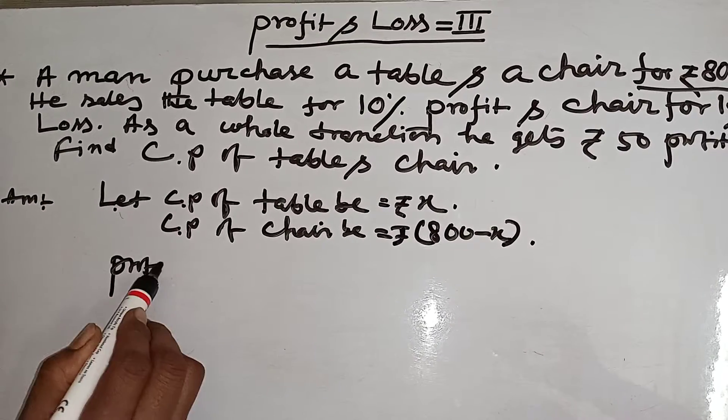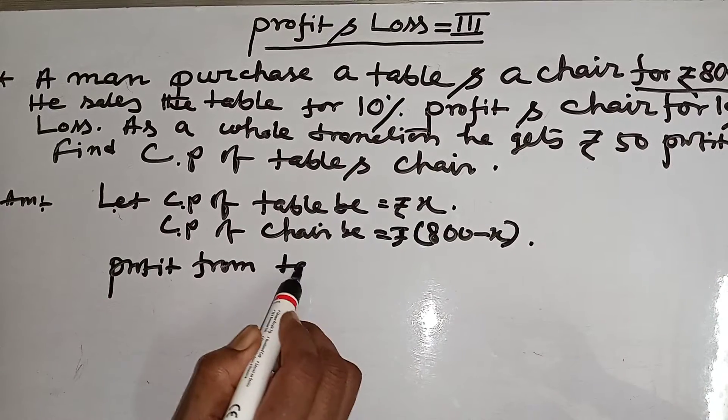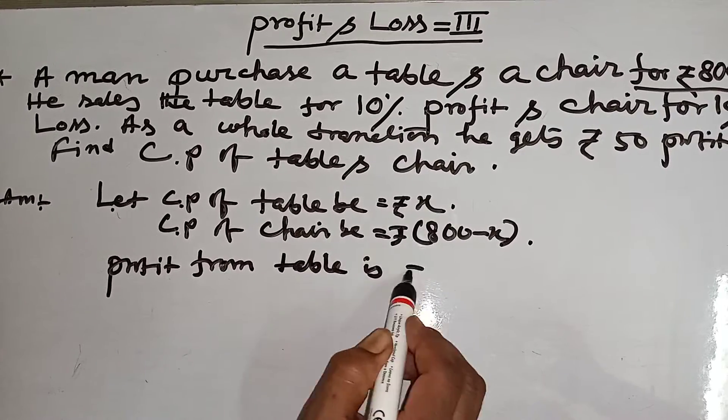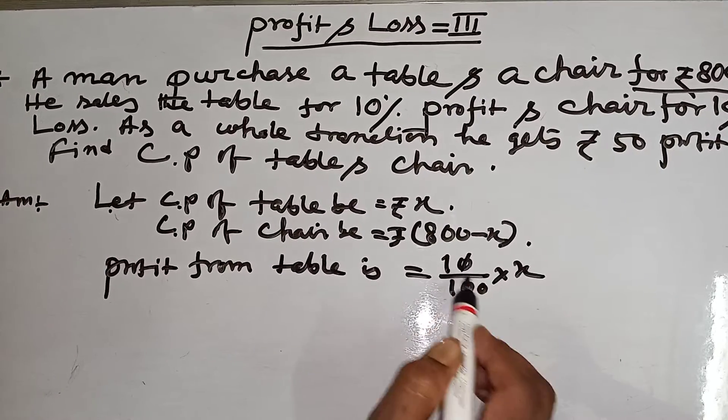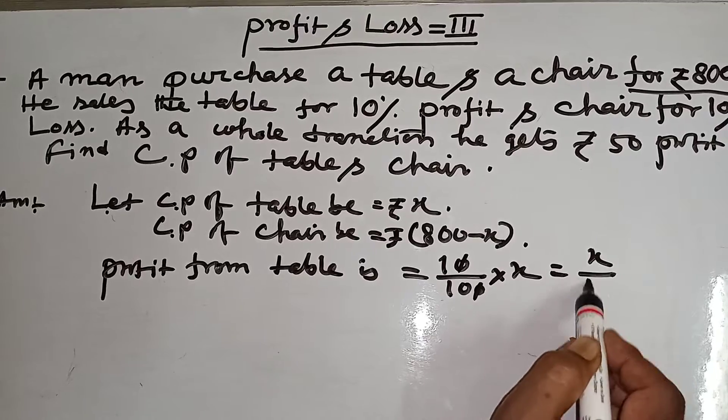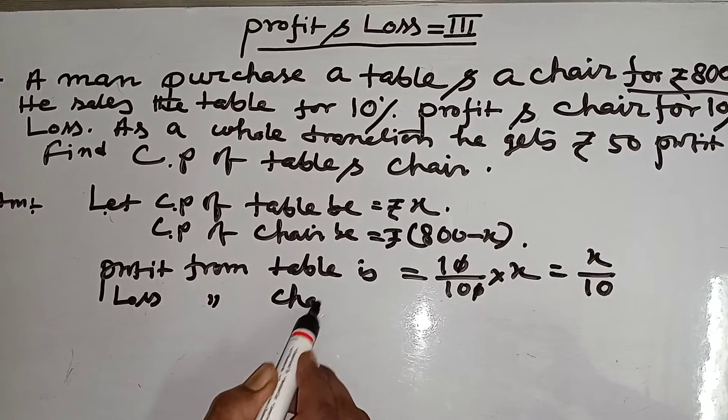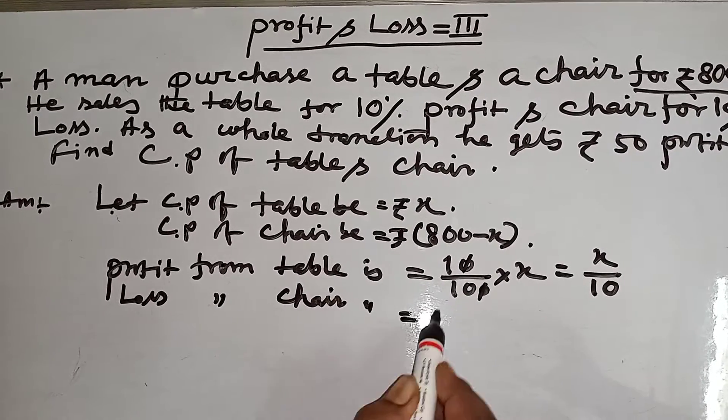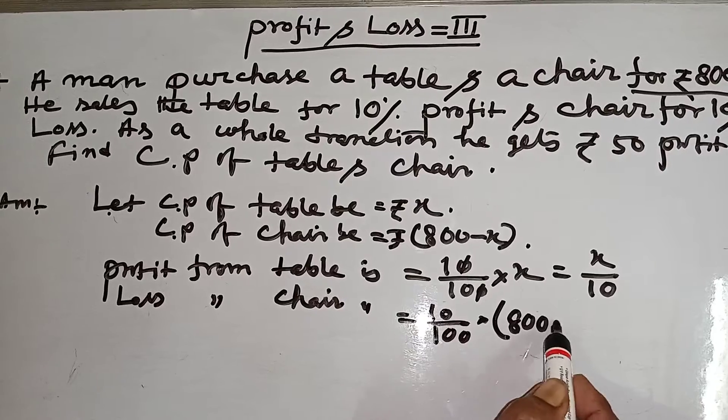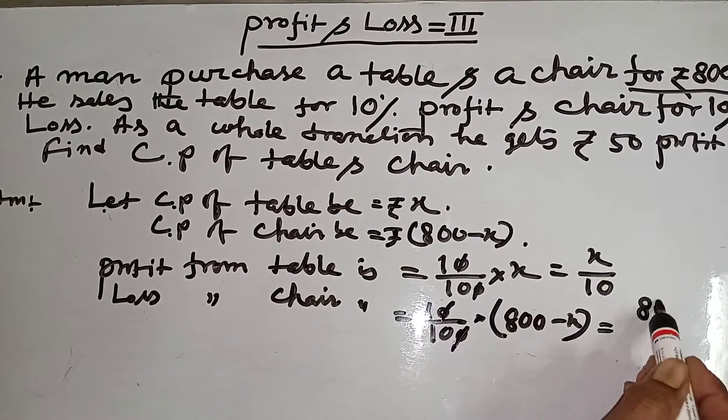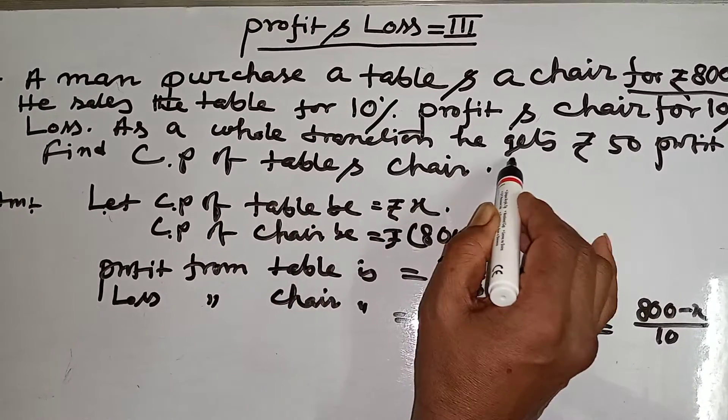Profit from table is 10 by 100 into X, that means X by 10. Loss from chair is 10 by 100 into 800 minus X, that means 800 minus X by 10.